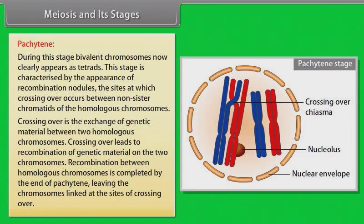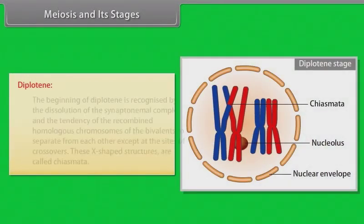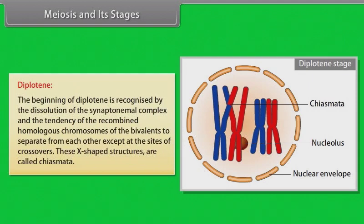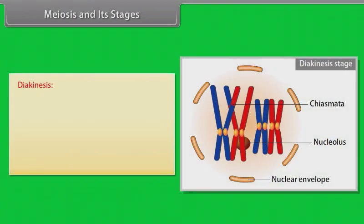Pachytene stage is followed by diplotene stage. The beginning of diplotene is recognized by the dissolution of synaptonemal complex and the tendency of the recombined homologous chromosomes of the bivalents to separate from each other except at the sites of crossovers. These X-shaped structures are called chiasmata.